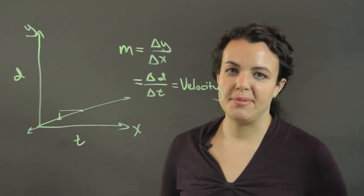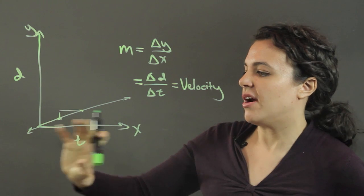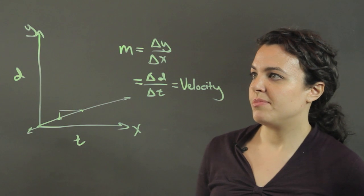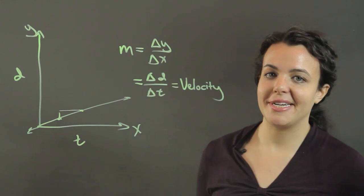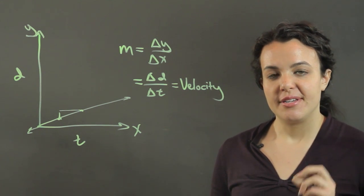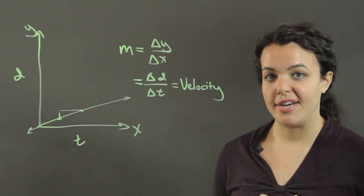Or maybe you are charting words here and minutes here if you're a typist. And so your rate would be words per minute. So the physical meaning of the slope of the graph is often used to represent a rate.